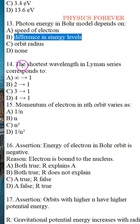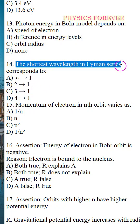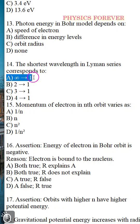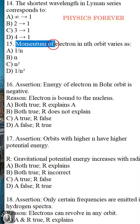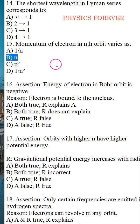Question number 14: The shortest wavelength in the Lyman series corresponds to — the correct option is A, where n tends to infinity (alpha tends to one). Question number 15: Momentum of electron in the nth orbit varies as — the correct option is B, which is proportional to n.